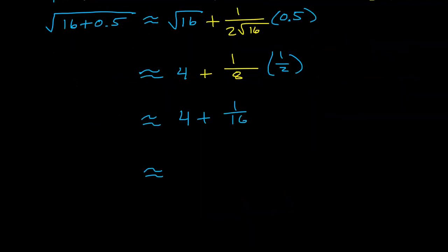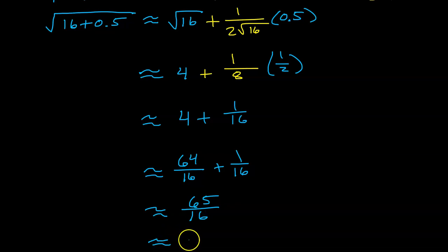4 is the same thing as 64 divided by 16. So now I have like denominators. So this will be the same as 65 sixteenths, which as a decimal is going to be 4.0625.